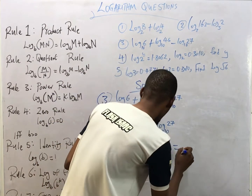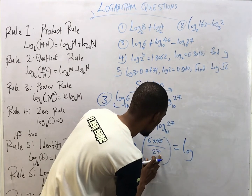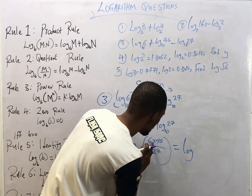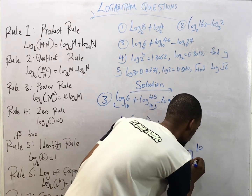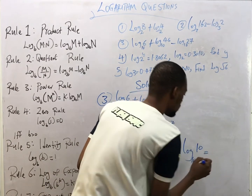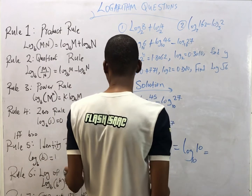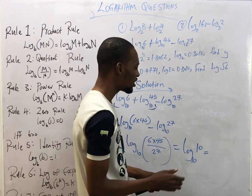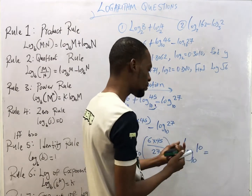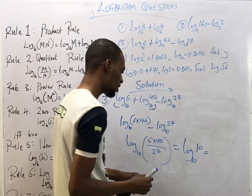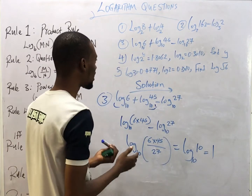Now, 6 times 45 is 270, and 270 divided by 27 equals 10. So this gives log₁₀(10). By the identity rule, any log where the number and the base are the same equals 1 — so the answer is 1.